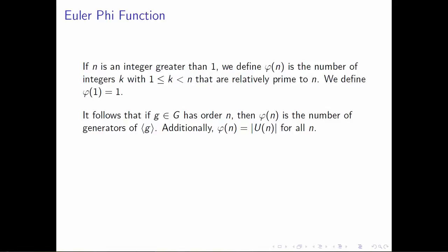It follows that if you take any group element g with order n, then phi of n is the number of generators of the group generated by g. Additionally, if we start with n and look at the set of positive integers less than n that are relatively prime to n, we already have a name for that set: U(n). So phi of n turns out to be the size of this set, or the order of the group U(n).